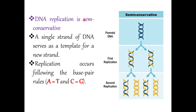The accepted working model is the semi-conservative model. In the semi-conservative model, a single strand of DNA serves as a template for a new strand. The double strand is separated; one strand serves as one template and the other as a second template. A new strand is synthesized on each existing strand. First there is separation, then synthesis of new strands.